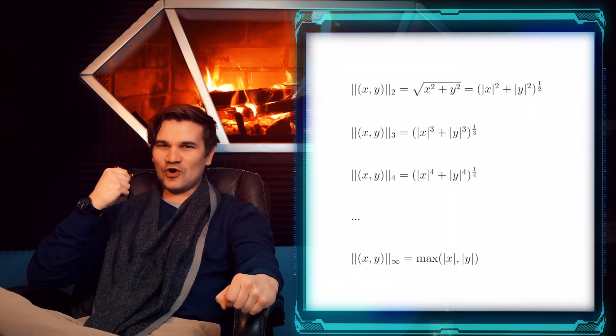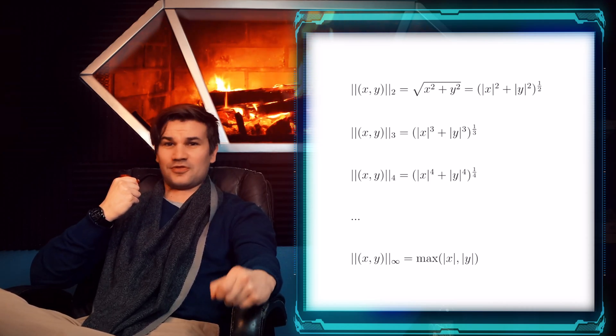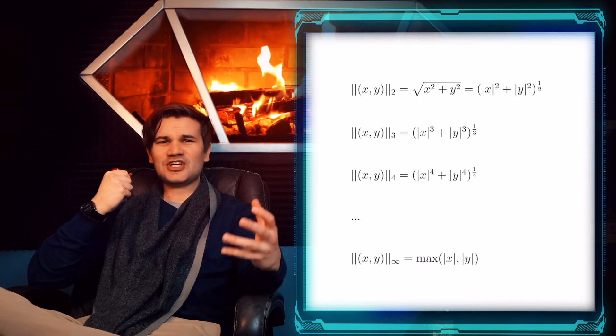Observe that the Euclidean norm has an exponent of 2 and a second root. Let's call the Euclidean norm the 2 norm. We might consider the 3 norm or the 4 norm, and so on.